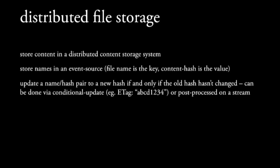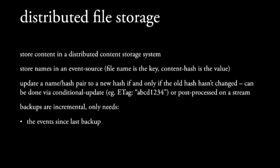Briefly, because I'm running out of time — we've used this to build a large distributed file storage system using exactly these kinds of techniques. It allows us to do things like conditional updates using an e-tag, which is the hash of the content. It gives us lots of operational advantages because we can back up only the events that changed — the event stream being the name-to-content associations — and we only need to back up current content which is not currently in our backup.